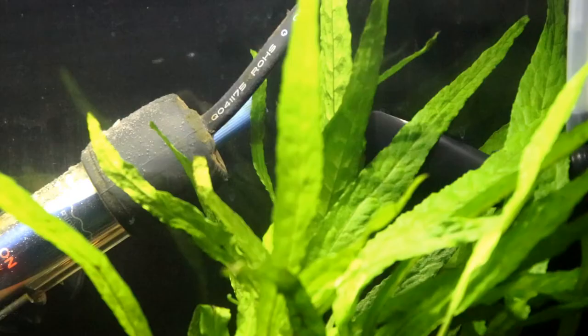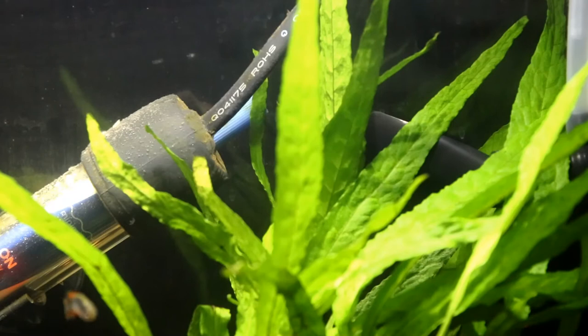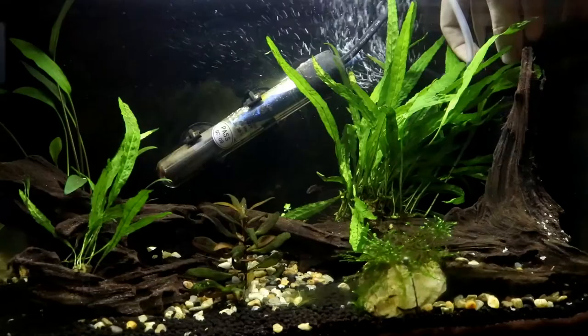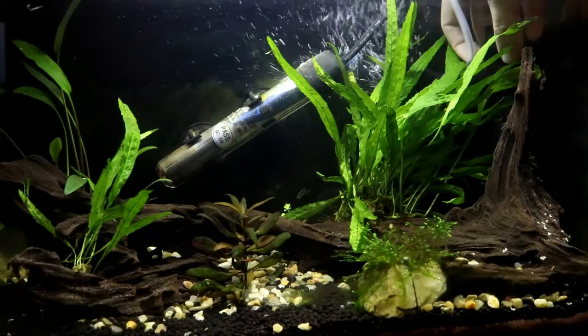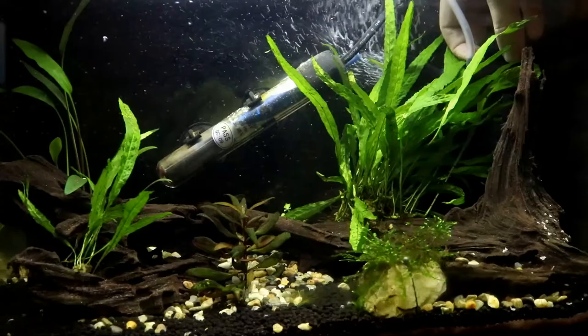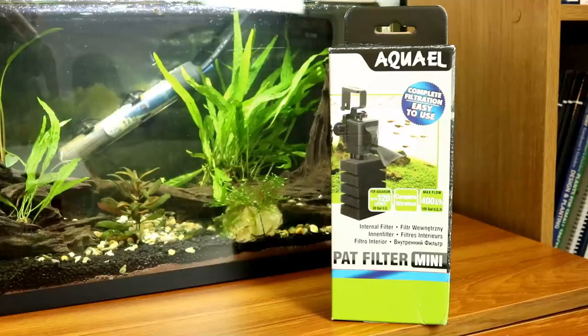The Pat Mini filter is advertised as being suitable for tanks up to 120 liters and in all honesty I fully believe that it could easily cope with a 120 liter tank. I probably wouldn't keep it in a tank less than 19 liters, even on the lowest setting it would likely be too strong, but anything above that it would be perfect for.